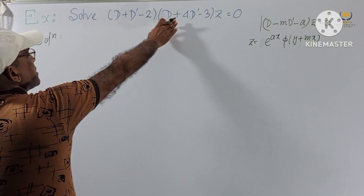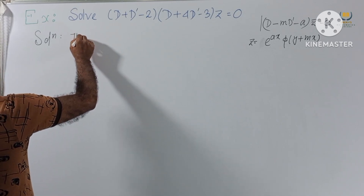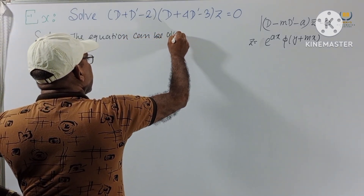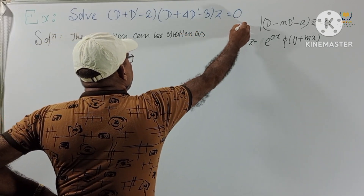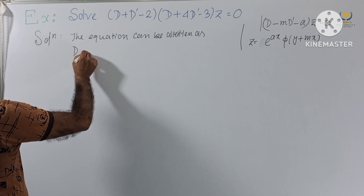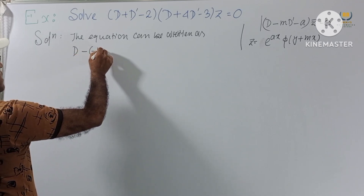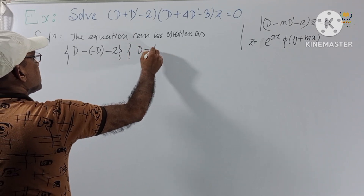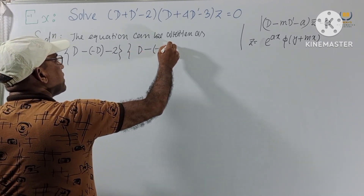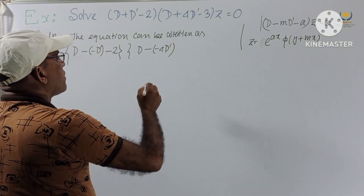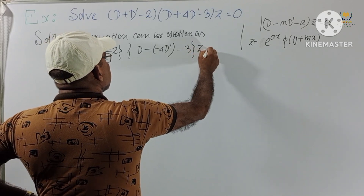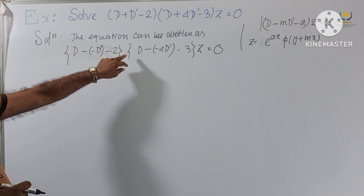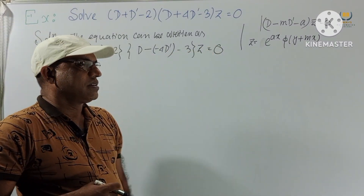This equation has plus signs given, so we express it in the required form. The equation can be written as [D - (-1)D' - 2][D - (-4)D' - 3]Z = 0. This is now in the form (D - MD' - A)(D - MD' - A)Z = 0.